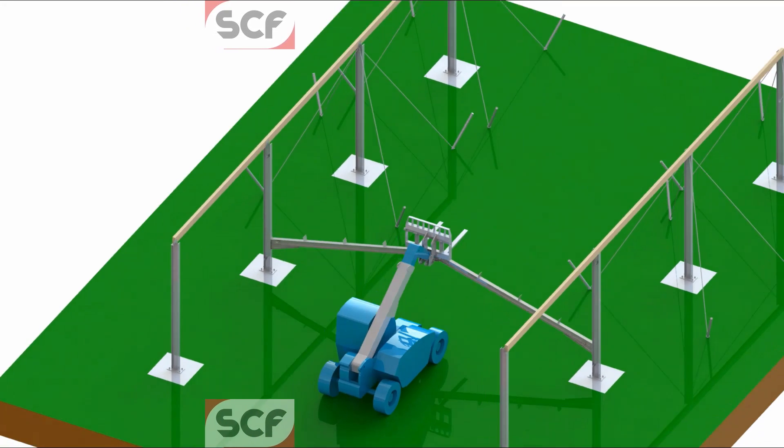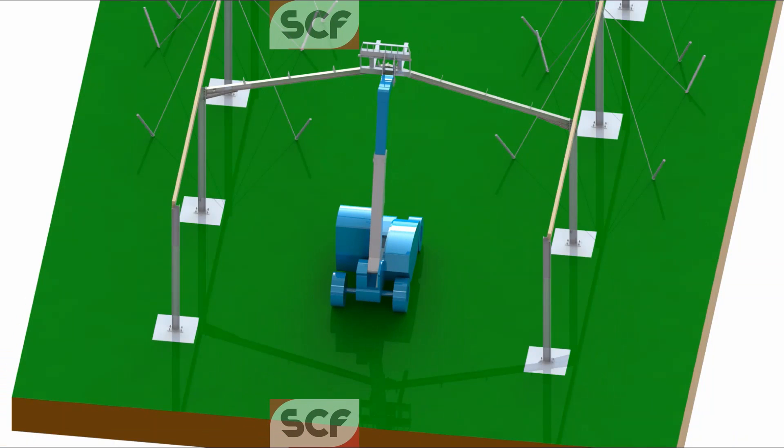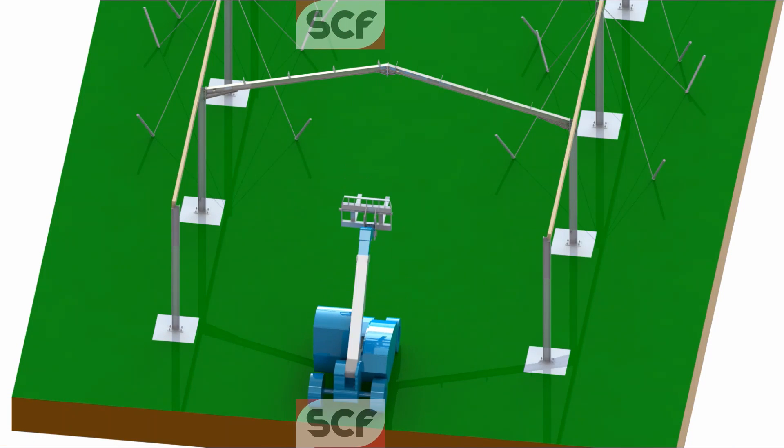After bolting the first rafter pair together at the apex, lift it into position and bolt it securely at both eaves. Do the same with the second rafter pair.